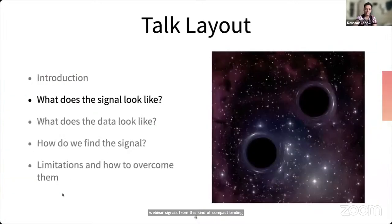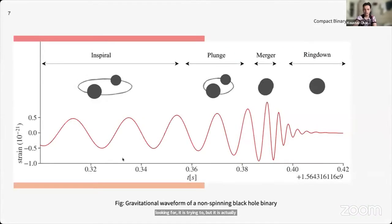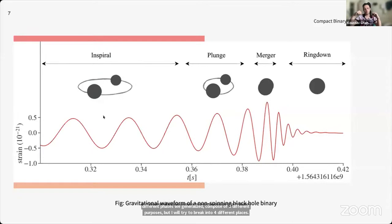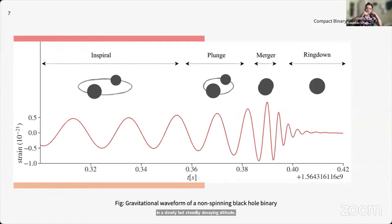Now that we know what signals we're looking for, it's helpful to understand what the signal actually looks like. Compact binary signals — in particular, non-spinning binary black hole signals — consist of four phases. The first is the adiabatic inspiral phase, during which the two black holes orbit each other in a slowly but steadily decreasing orbit, until a climax when the two black holes plunge into one another to form a highly excited black hole.